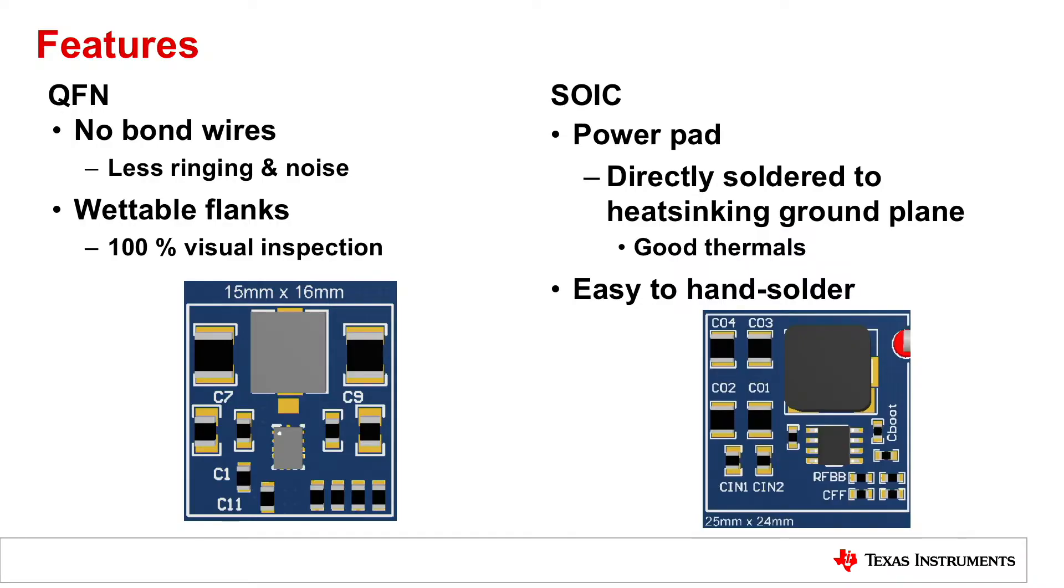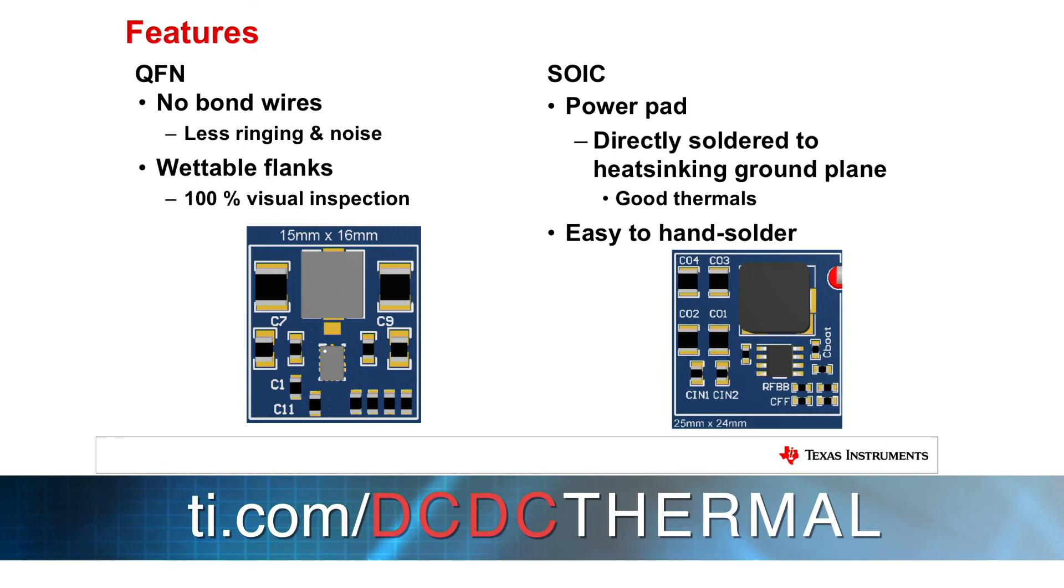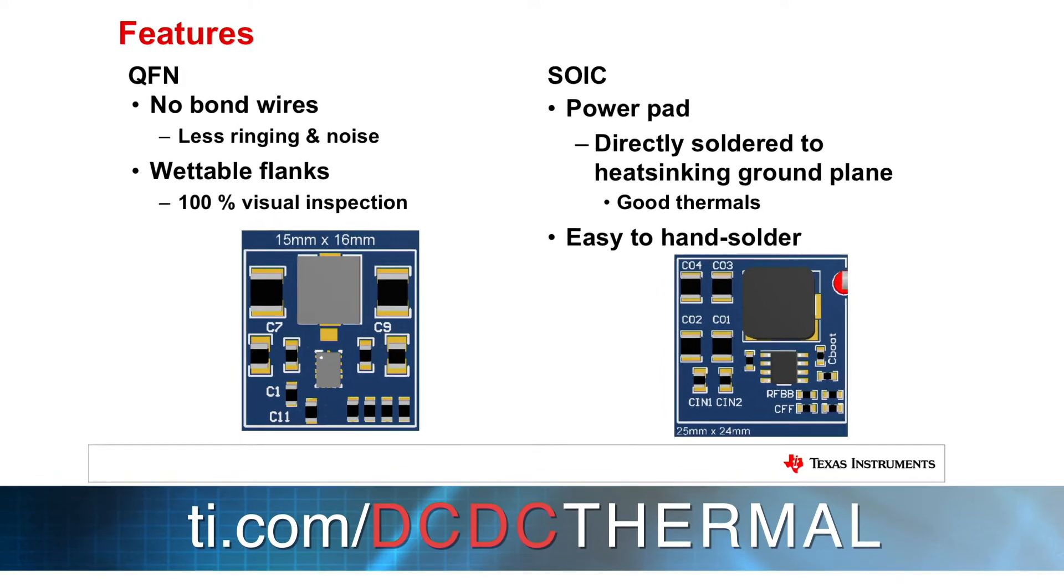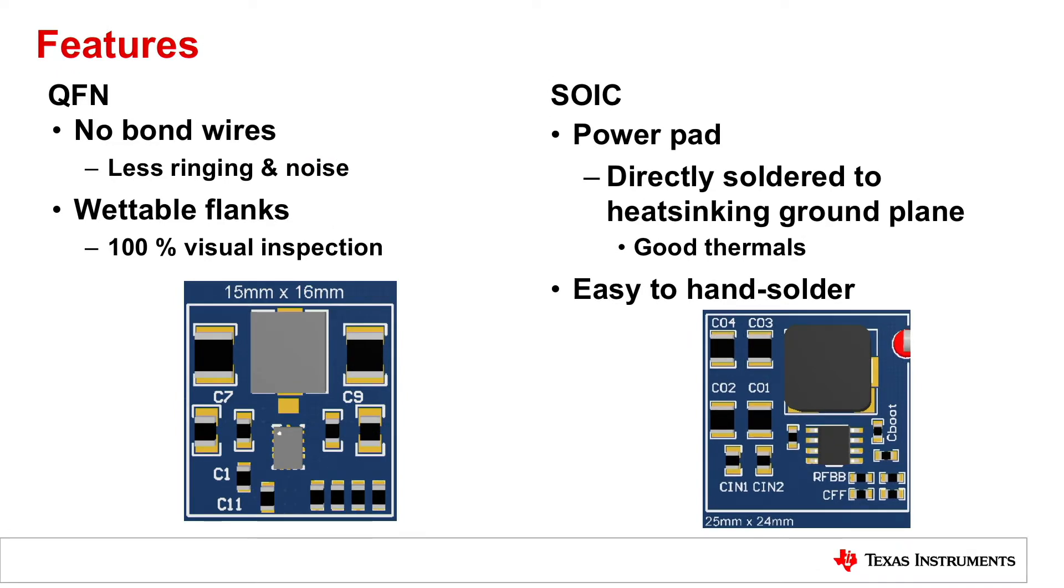Essentially, the QFN package, not only being very small, also has no bond wires, which means you don't have a lot of noise generated, which makes it easier for you to pass your conducted and radiated EMI.